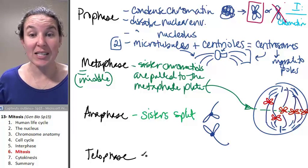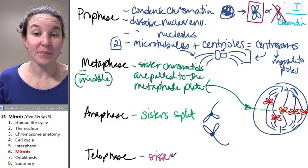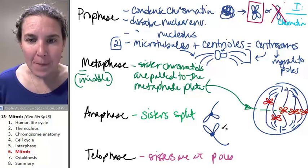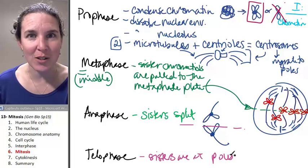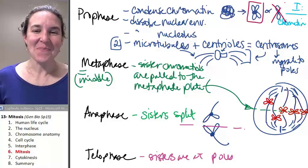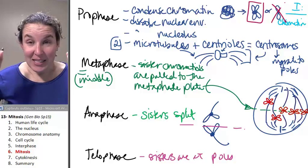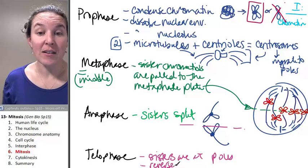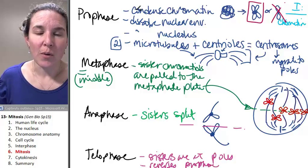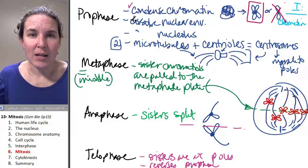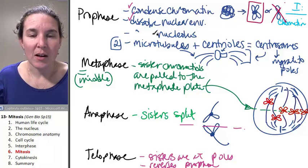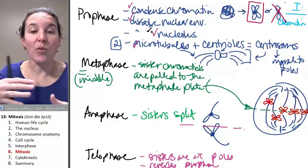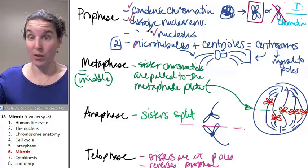And in telophase, the story is done. The sisters are at the poles. So if you think about it, at the poles you're going to have a complete set of chromosomes. How cool is that? We now have a complete set of chromosomes at each end and telophase reverses prophase. So the chromosomes unravel. The nuclear envelope reforms. The nucleolus reforms. The microtubules disappear. So the whole thing is reversed and you end up with a nucleus on each end.